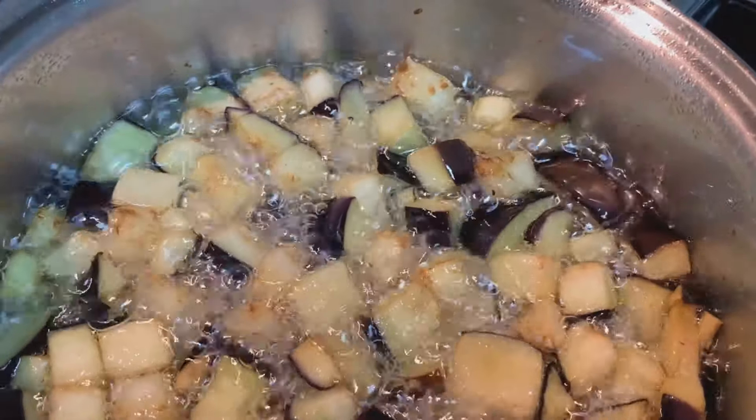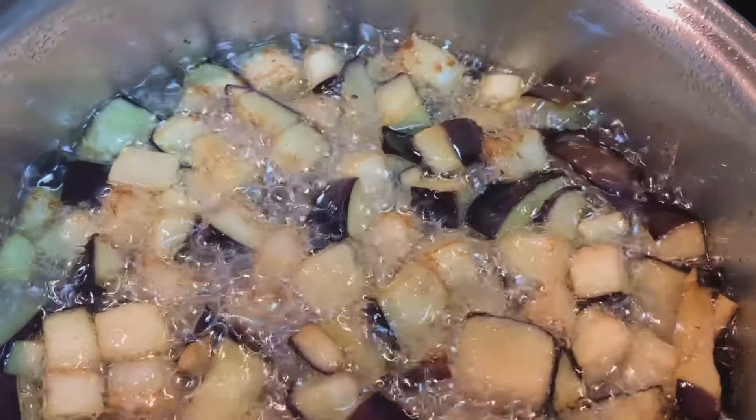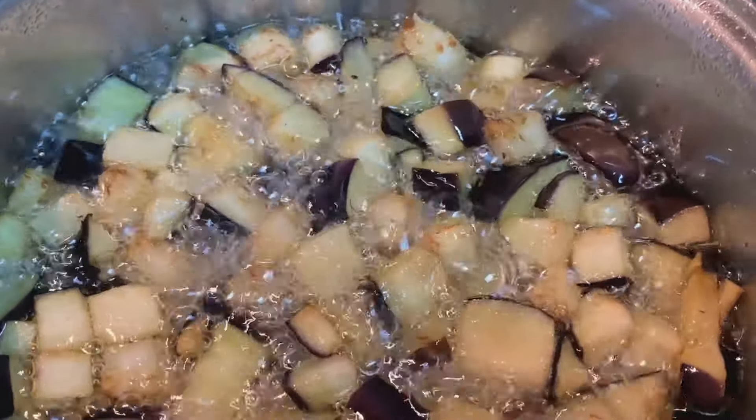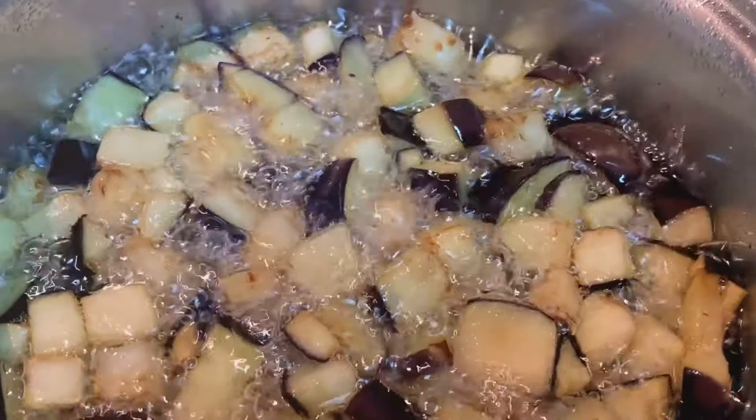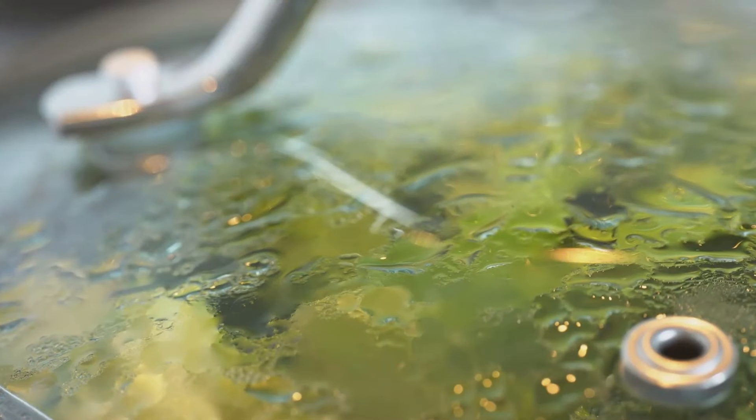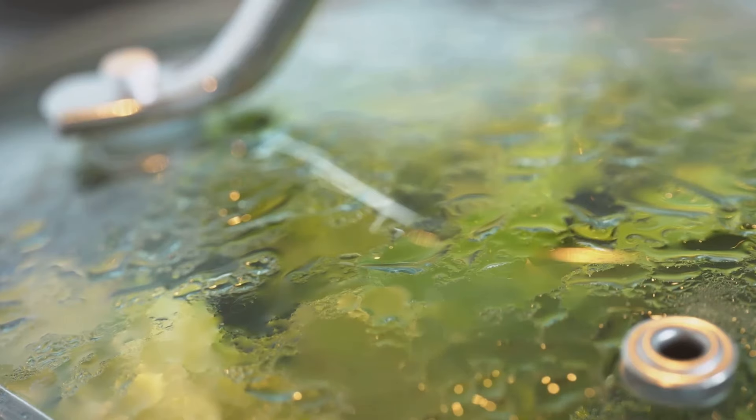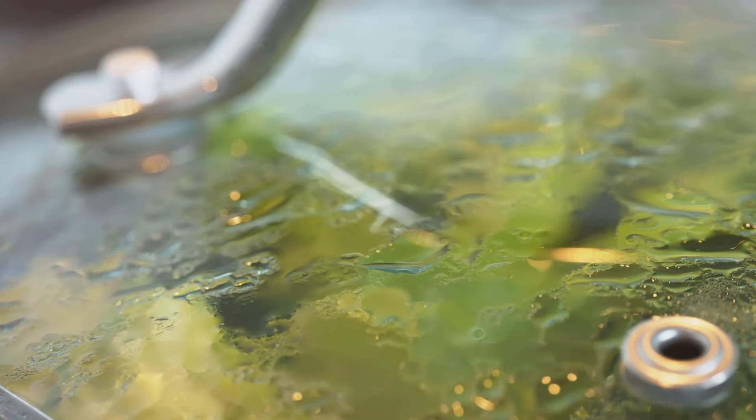Sprinkle in one tablespoon of cloves. The cloves will float at first, but they will eventually sink as they absorb the water. Step three: simmer. Turn the heat down to low, allowing the water to simmer.